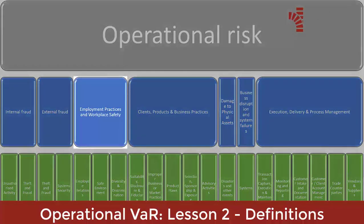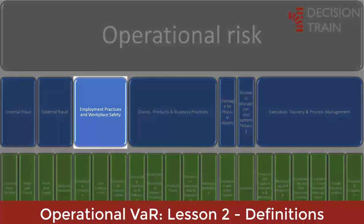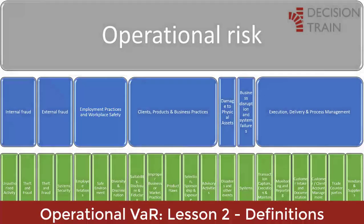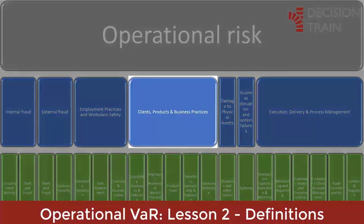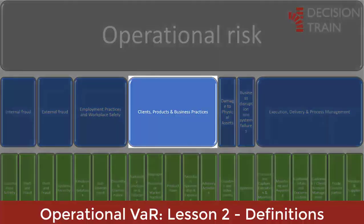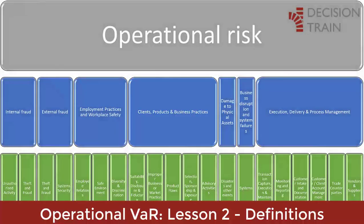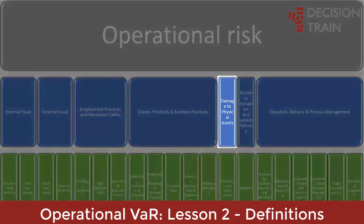3. Work practices and workplace safety: discrimination, workers' compensation, health and safety of employees. 4. Customers, products, and business practices: market manipulation, antitrust practices, improper trading, product defects, fiduciary breaches, account churning. 5. Damage to physical assets: natural disasters, terrorism, vandalism.